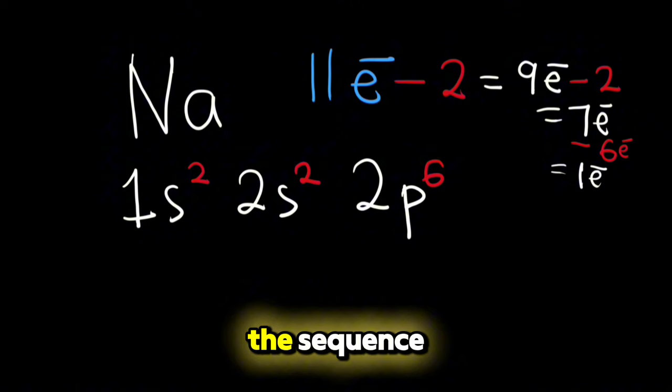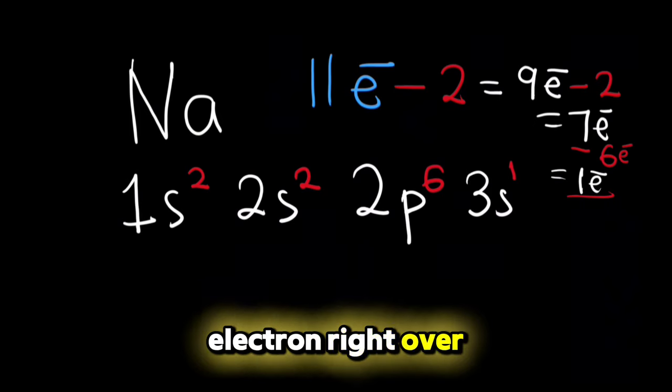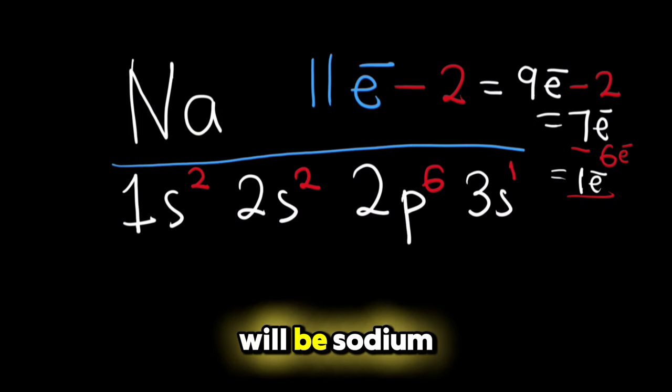What's next in the sequence? The next one is 3s. Now we are only left with one electron, so we will just write the one electron right over here, and this here will be sodium.